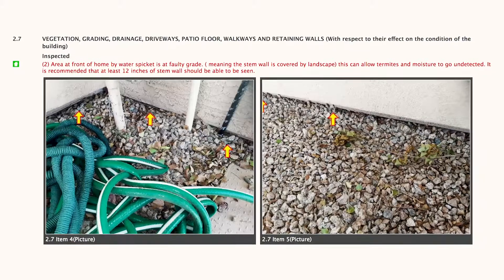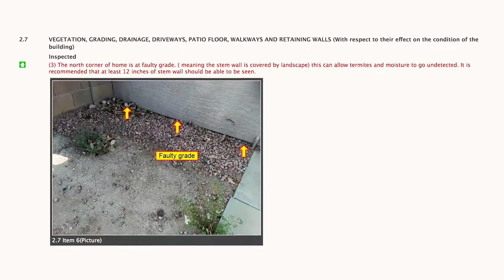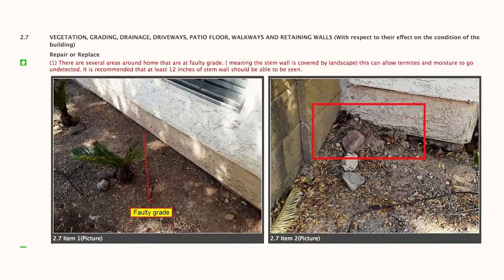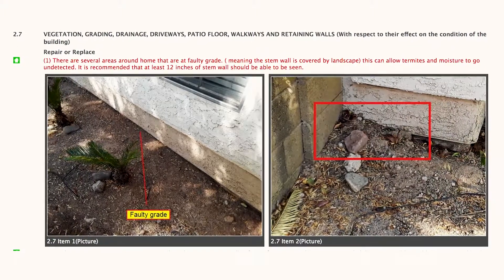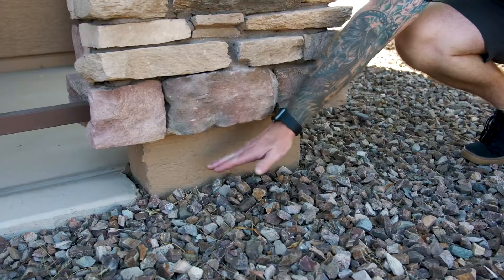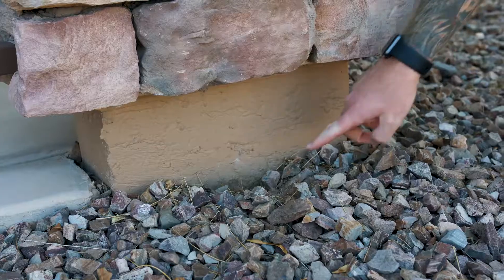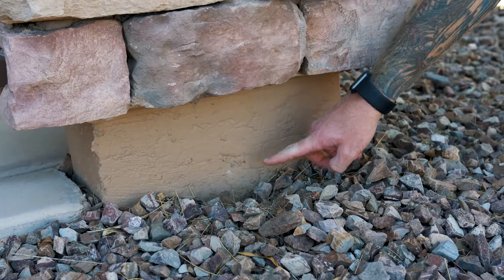Termite reports and home inspections may note faulty grade, landscaping contact with the slab — things of that verbiage. What does that mean? Is landscape touching the stem wall okay, or is it something to worry about? Our opinion: most of the time, landscaping up against your stem wall is by design and it is not an issue.